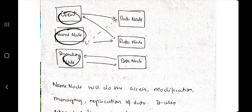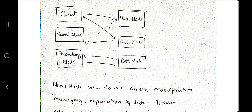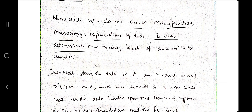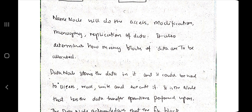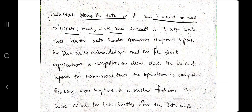In the architecture, the name node, client, and secondary node are interconnected. The client sends a request to the name node; the name node fetches the data from the data nodes and takes help from the secondary node. The data is stored in the data nodes. The name node performs access modification, managing, and replication of data, and also determines how many blocks of data are to be allocated.